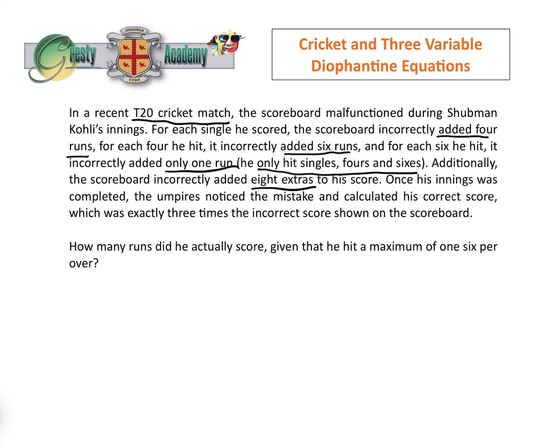Additionally, the scoreboard incorrectly added eight extras — it's not clear what the extras were, could have been leg byes — to his score. Once his innings was completed, the umpires noticed the mistake and calculated his correct score, which was exactly three times the incorrect score shown on the scoreboard. How many runs did he actually score, given that he hit a maximum of one six per over, i.e. a maximum of 20 sixes, because there were 20 overs.